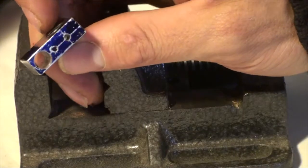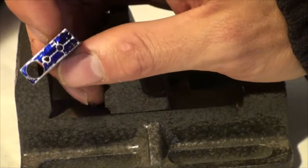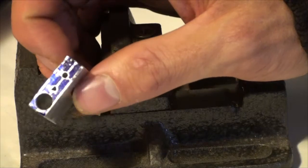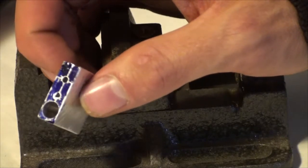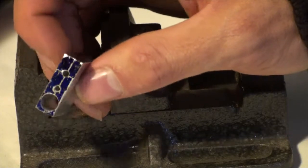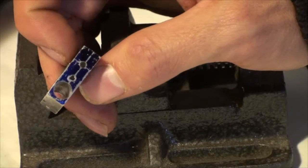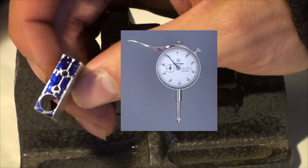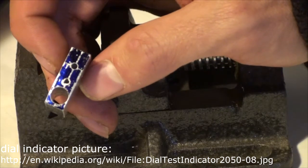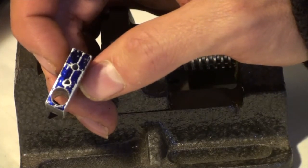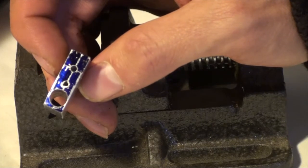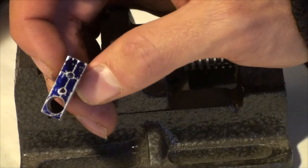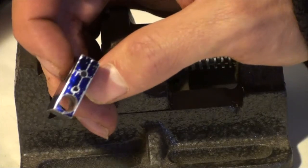So in order to - I don't have a DRO on my mill, a digital readout - so I just put a magnetic stand behind the table on the mill, and I put a dial indicator on it, so that I could get an accurate measurement of how far I was traveling, because you don't really trust the dial on the handle on the mill.